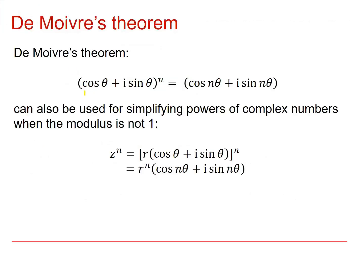We've seen in a previous video that De Moivre's Theorem tells us that cos theta plus i sine theta all to the power n is cos n theta plus i sine n theta. The power comes in and multiplies the angle. If, however, we've got a complex number that does not have a modulus of 1, we can still apply De Moivre's Theorem.